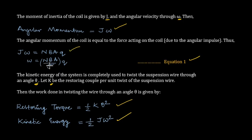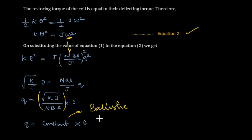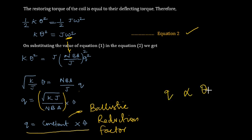Substituting equation 1 (ω = N·B·A·Q / J) into equation 2 and simplifying, then taking the square root, Q can be expressed in terms of θ as Q = (some constant) × θ. This particular constant is known as the ballistic reduction factor. From this relationship, Q is proportional to θ — whatever deflection occurs can be expressed in terms of the charge flowing through the coil.